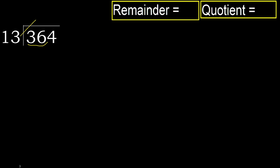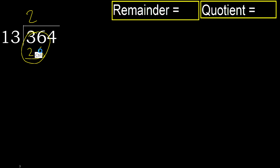But not greater. 13 multiplied by 3 is 39, which is greater. Multiply by 2: 26 is not greater. Okay, subtract — giving 10. Next.